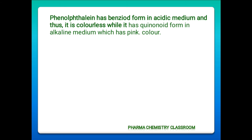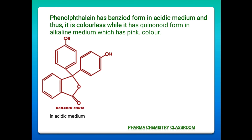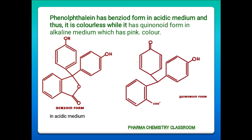Phenolphthalein exists as the benzenoid form in acidic medium and it is colorless in acidic medium, while it has the quinonoid form in alkaline medium, which has a pink color. This is the benzenoid form present in acidic medium, and this is the quinonoid form existing in alkaline medium.